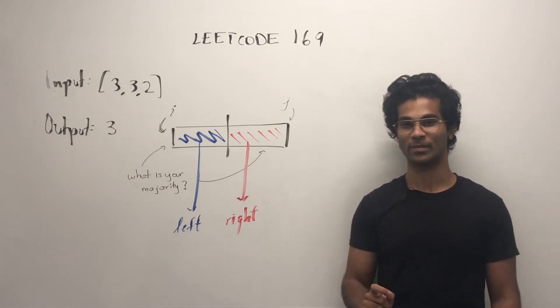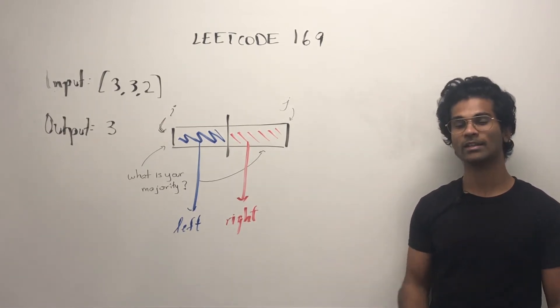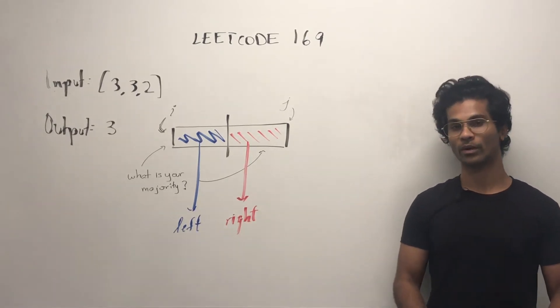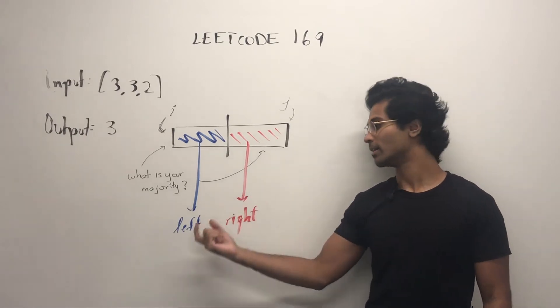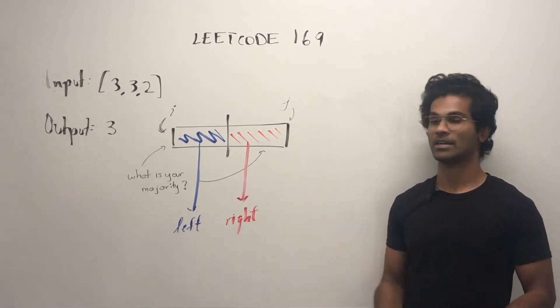Otherwise, if there's a disagreement, then we're going to manually calculate what left said and what right said. So what we're going to do is take whatever answer left said, it's going to say three, let's say, for example, and right could say five.